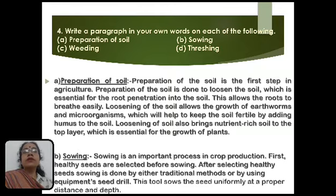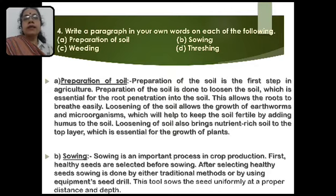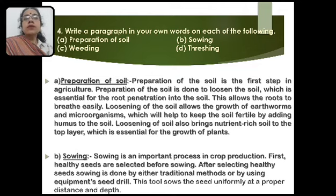The next question is about sowing. Sowing is an important process in crop production. First, healthy seeds are selected before sowing. After selecting healthy seeds, sowing is done either by traditional methods or by using equipment, that is a seed drill. This tool sows the seeds uniformly at a proper distance and depth.